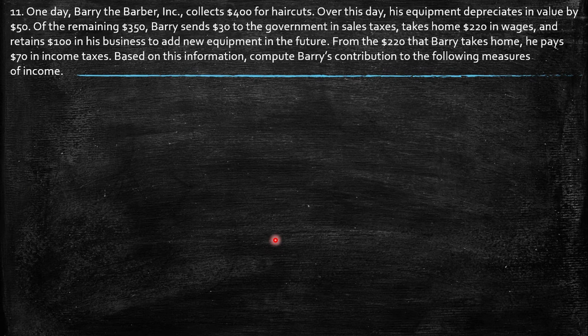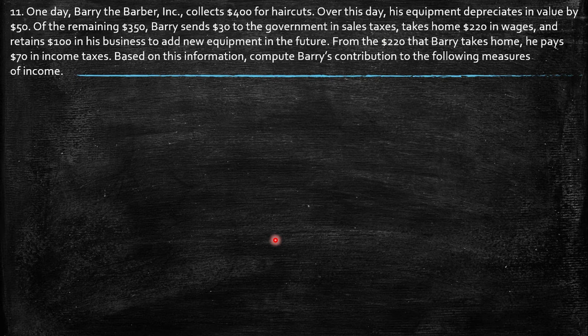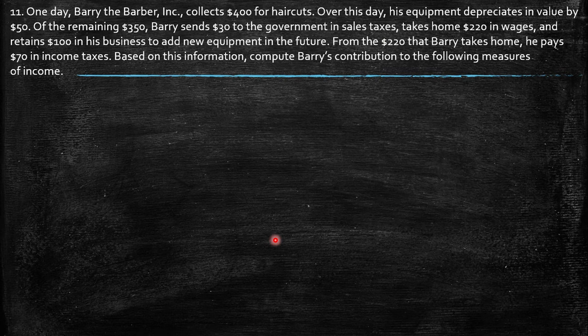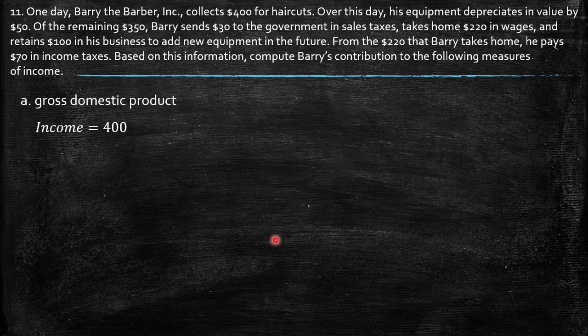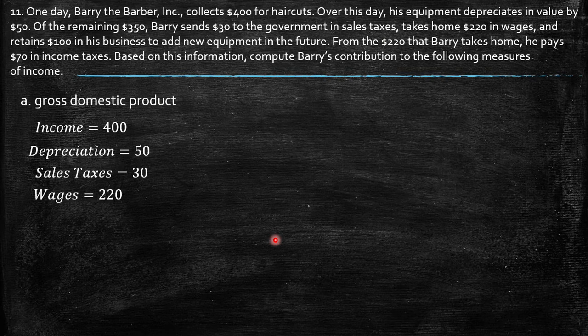Exercise 11: one day Barry the Barber collects $400 for haircuts. Over this day, his equipment depreciates in value by $50. Of the remaining $350, Barry sends $30 to the government in sales taxes, takes home $220 in wages, and retains $100 in his business to add new equipment in the future. From the $220 that Barry takes home, he pays $70 in income taxes. Compute Barry's contribution to the following measures of income. First, gross domestic product.